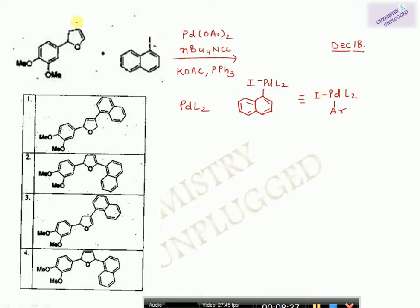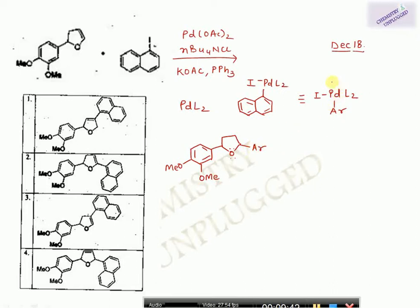The most important point to remember: the first step is coordination with the alkene, then migratory insertion. In the migratory insertion, the aryl group attaches to the electron-rich center of the alkene, because the oxygen provides electrons — this carbon is more electron rich. So aryl attaches here and PdL₂I attaches at the other carbon. These two attach in syn fashion: if aryl is above the plane, palladium is also above the plane. This is syn addition.